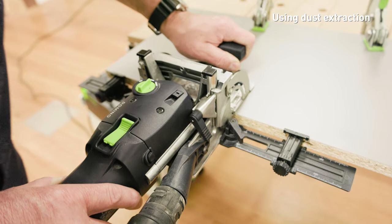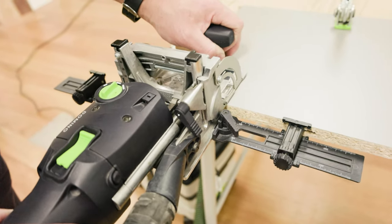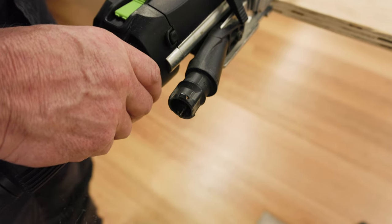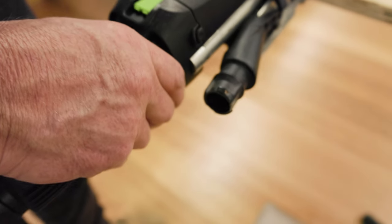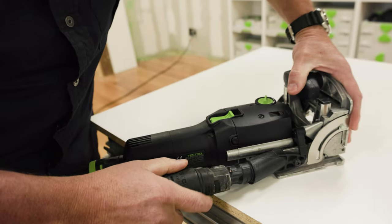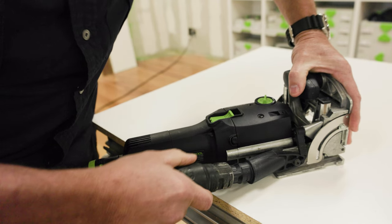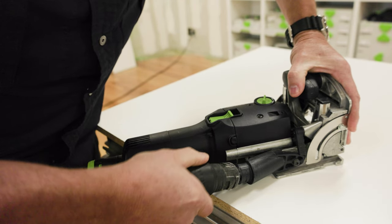The Domino Joiner is intended to be used with a dust extraction system. Using the machine without dust extraction will cause it to clog with wood chips. When installing a Festool 27mm dust extraction hose, fit it over the bayonet fitting on the tool.